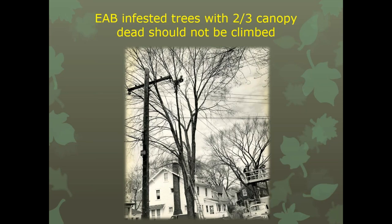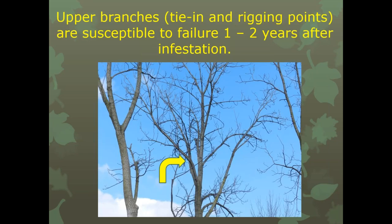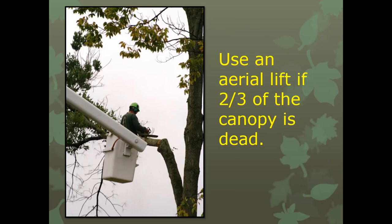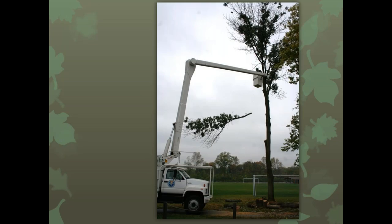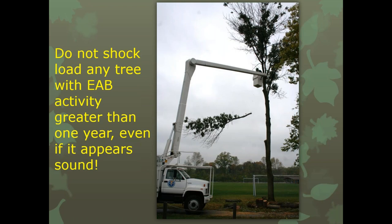Shock loading is a particular danger — if a branch is tied to a rope and swings back and hits the tree, we've seen cases where the whole tree collapsed and broke apart, injuring or killing workers. We have to be very careful about climbing and removing ash trees. We need to keep an eye on them for public safety, and if possible, just fell the entire tree.